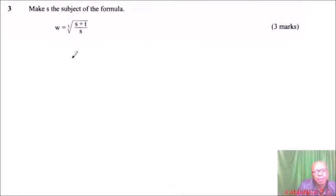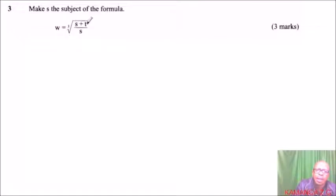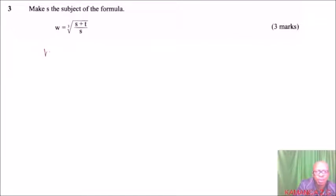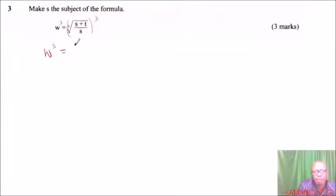Question number three: make S the subject of the formula, given W equals the cube root of (S + T) over S. We have S in the numerator and S in the denominator. The first thing to do is cube both sides: W cubed equals (S + T) divided by S, since the cube root disappears.